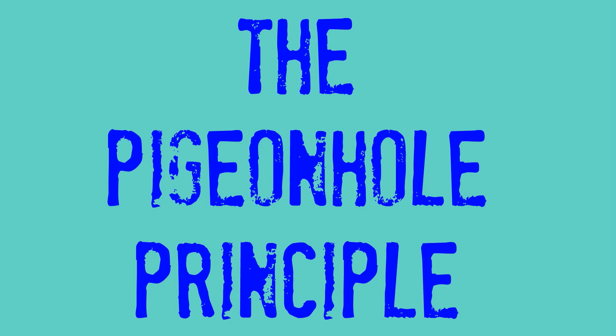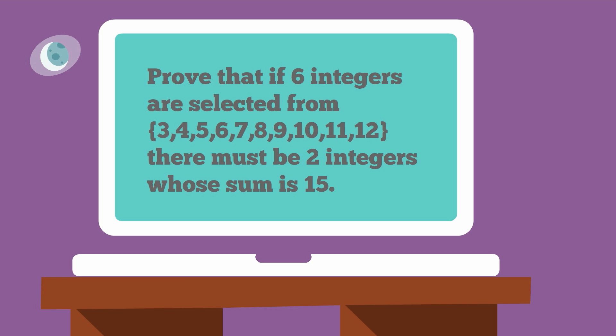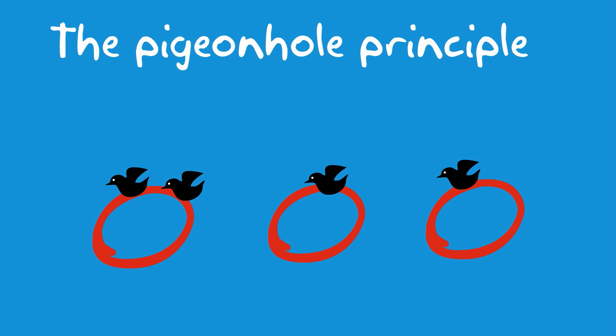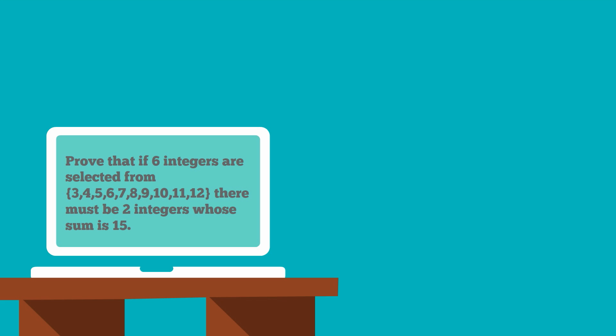Today, the pigeonhole principle made easy. Here's the first of three problems that I'm going to do today. The pigeonhole principle is named after the idea of storing pigeons in holes, and it says that if you have more pigeons than holes, then at least one hole must have at least two pigeons. One of the big challenges with pigeonhole principle questions is working out what are the pigeons and what are the holes. So let's go back to our first problem.